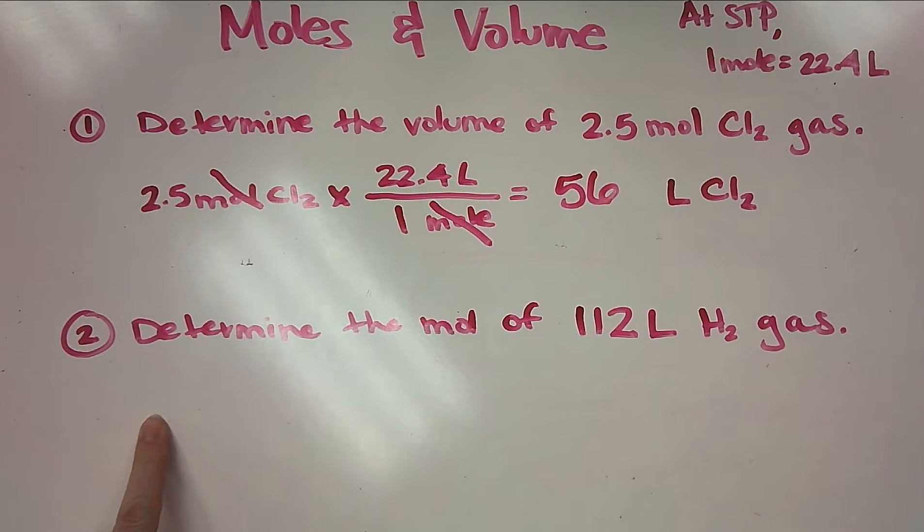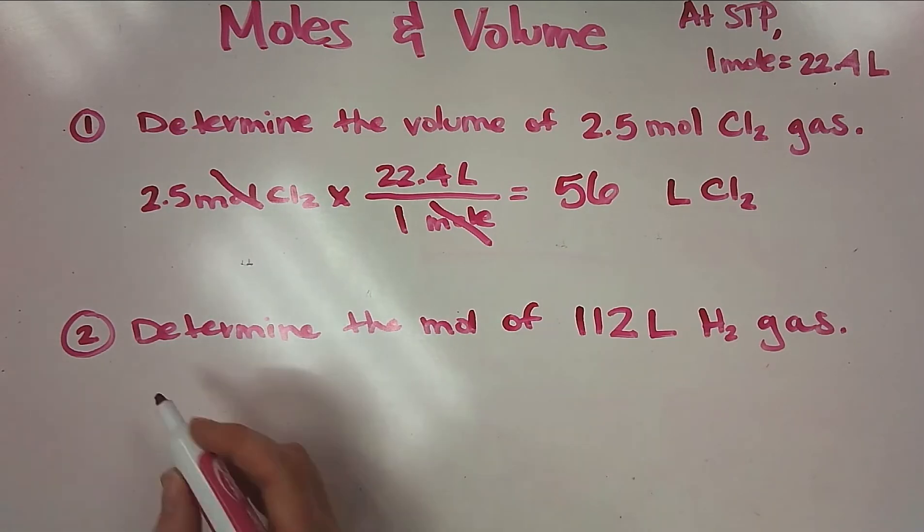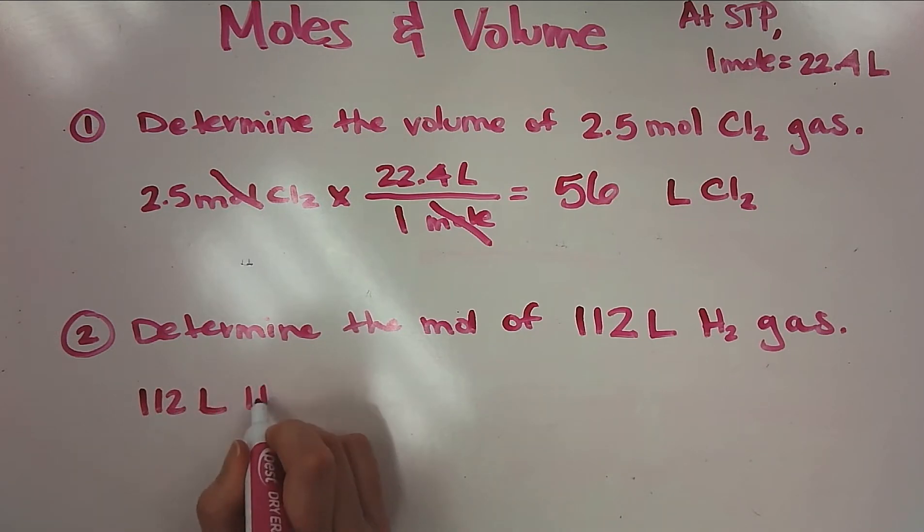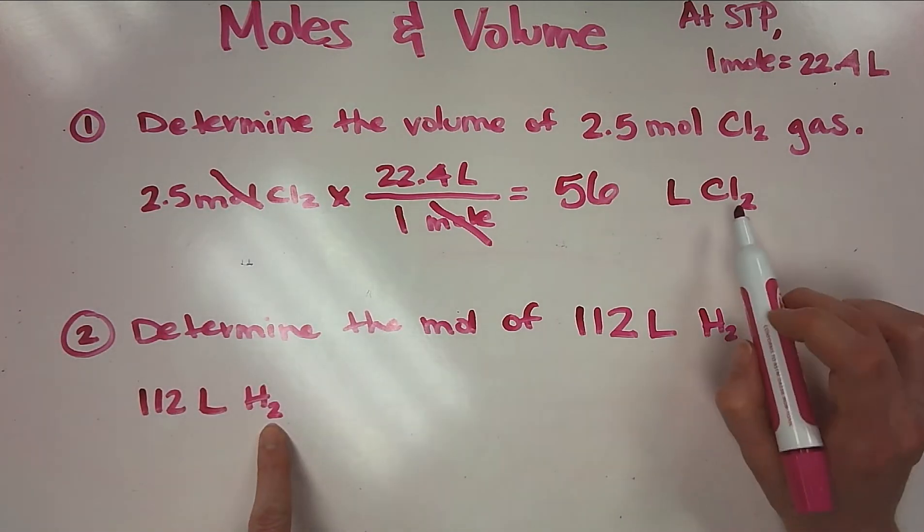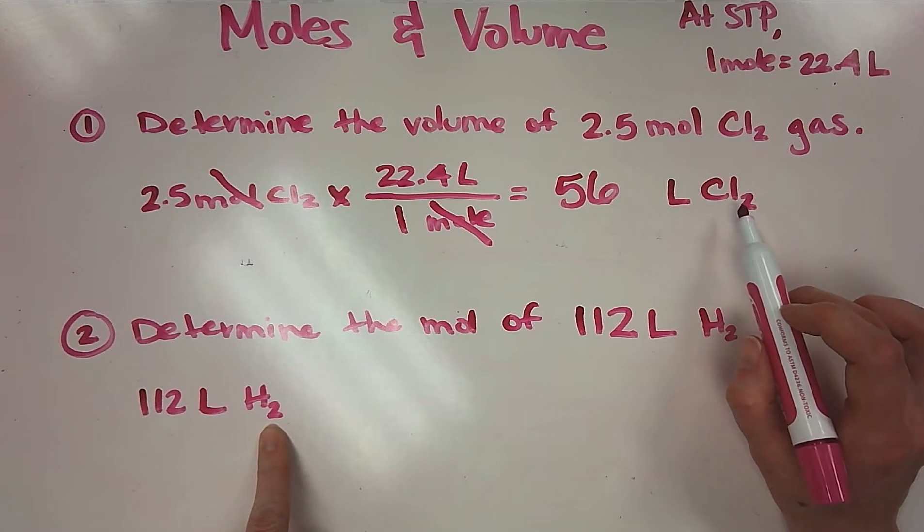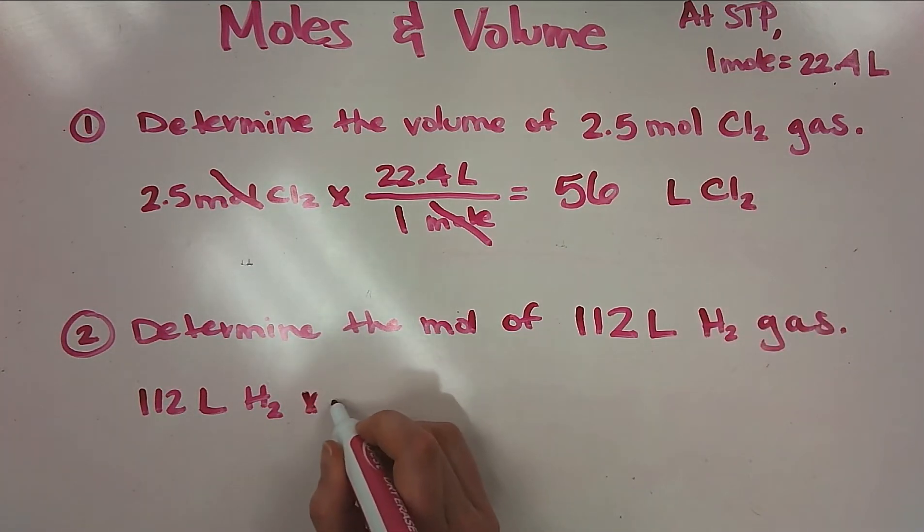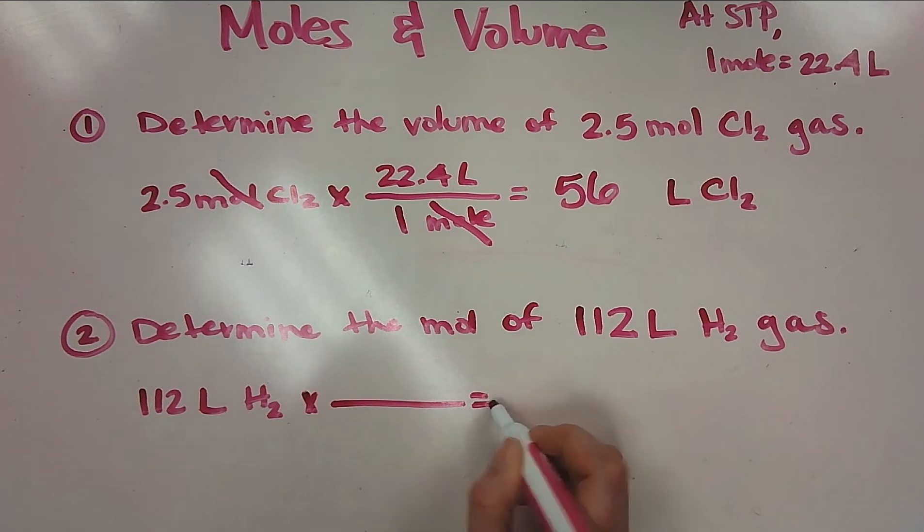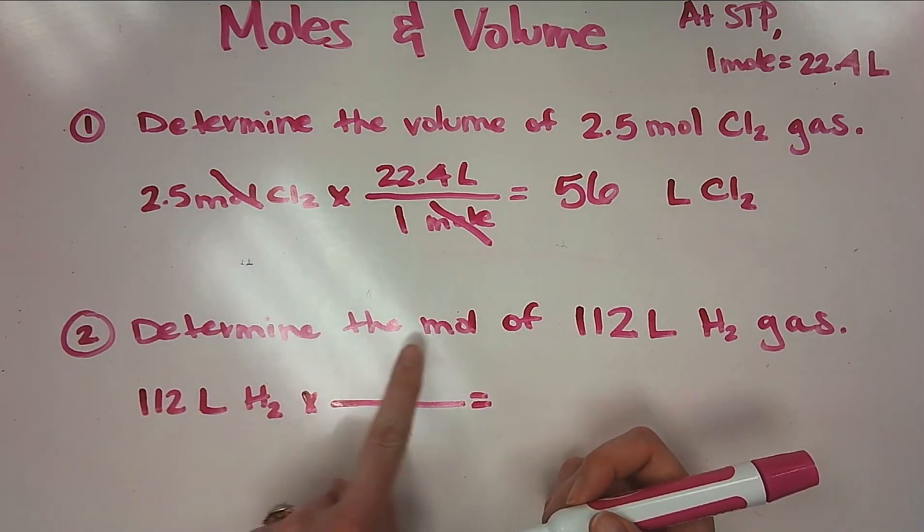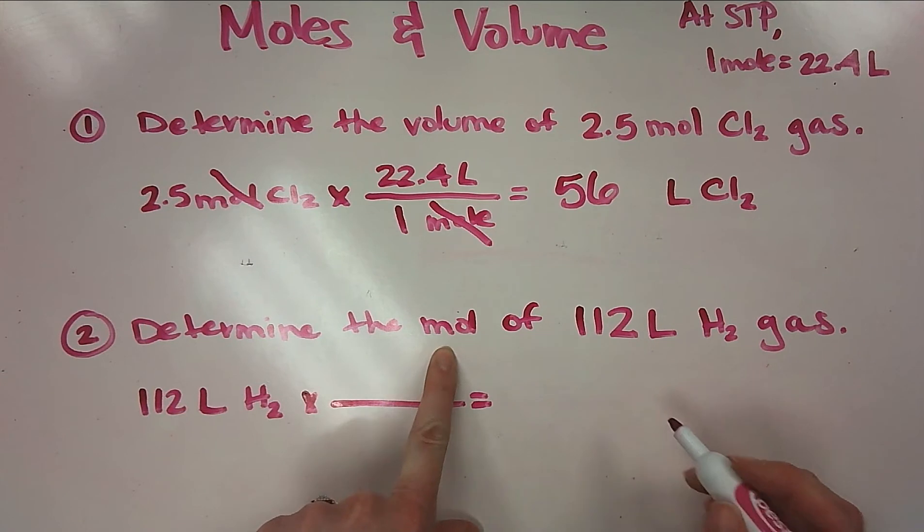Number two: determine the mole of 112 liters of hydrogen gas. So always write down what you're given—112 liters of H2. Now remember for hydrogen and chlorine they're part of what we call Brinclehoff, that's why they have the two. We're not using it in this problem but we're leaving it there. Let's set up a conversion factor and I'm going to write what I'm asked to solve for. Determine the mole, so I'm asked to determine it—it means I don't know it yet—so mole of H2.